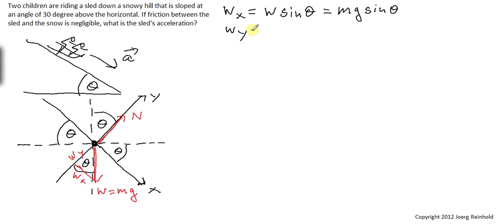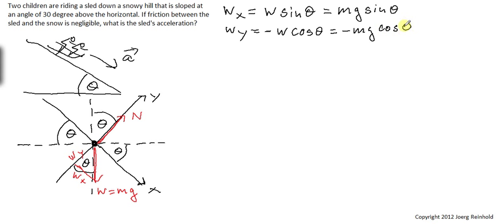The y-component of the weight is the weight times the cosine of theta. The y-component is adjacent to the angle theta, and it is on the negative side of the y-axis. So it is minus mg cosine theta. Obviously, there is no x-component for the normal force. The normal force is strictly pointing in the y-direction, so the y-component of the normal force is just plus the magnitude of the normal force.